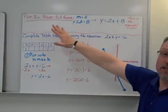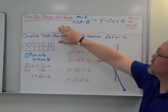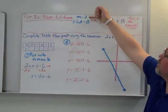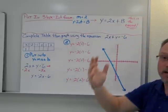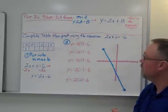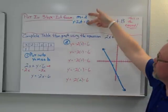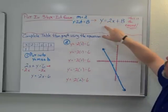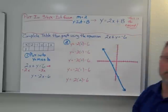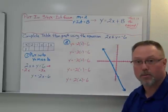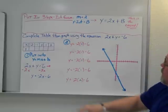The easiest case of all is writing in slope-intercept form when you're given both the slope and the y-intercept. That can't be any easier because you already know both numbers — all you have to do is put them in the right spots, so y equals 2x plus 8.